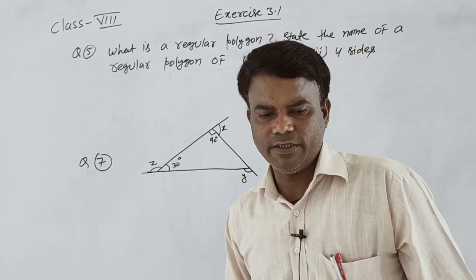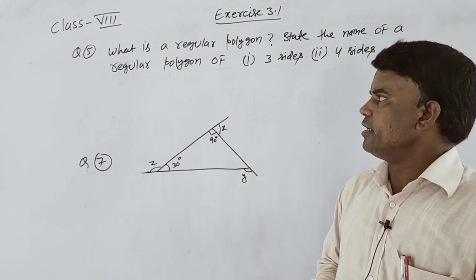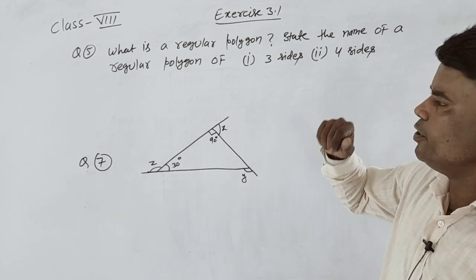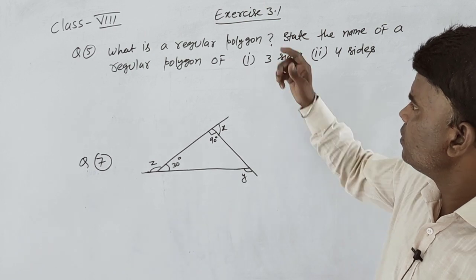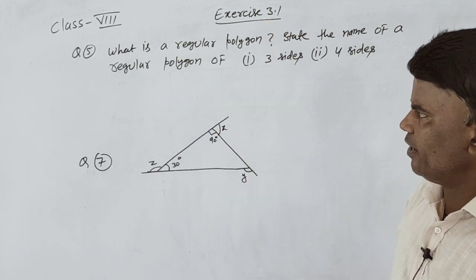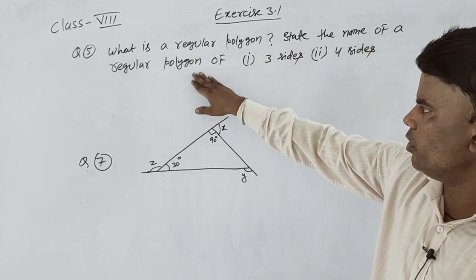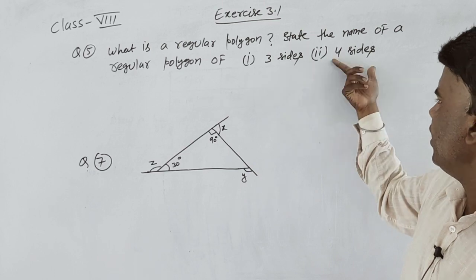Hello students, welcome to RCA online class, class 8 mathematics. We are continuing to discuss exercise 3.1. Today we discuss question number 5: What is a regular polygon? State the name of a regular polygon of three sides and four sides.